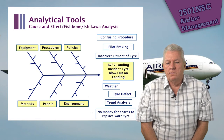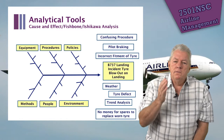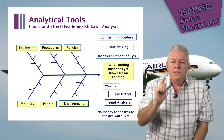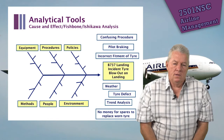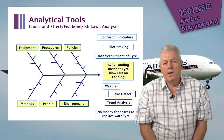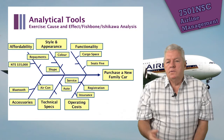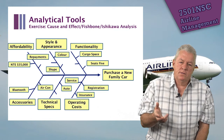The standard headings Ishikawa used are: policies, procedures, equipment, environment, people and methods. In this case, using a Boeing 737 landing incident — tyre blowout on landing — you allocate likely causes of the accident to these categories and their sub-causes, coming up with a very informed collective view. You could also use this type of analysis to purchase a new car, with headings like functionality, style and appearance, affordability, operating costs, technical specifications and accessories, mapping them all out to reach a decision.